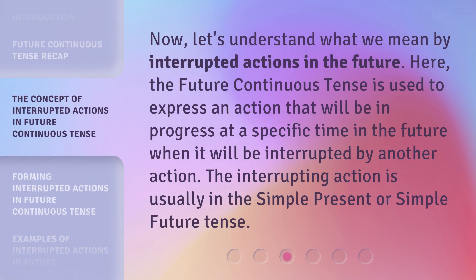Now, let's understand what we mean by interrupted actions in the future. Here, the future continuous tense is used to express an action that will be in progress at a specific time in the future when it will be interrupted by another action. The interrupting action is usually in the simple present or simple future tense.